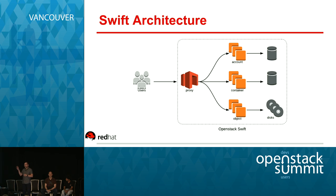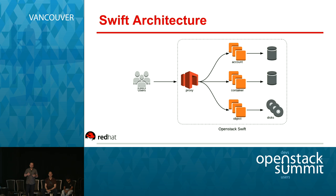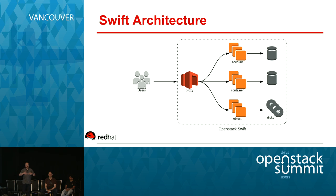The account in Swift — you can call it the tenant or project in OpenStack terms. Then we have the container server, which is another metadata server whose job is to hold a collection of all the objects located inside that container. If you're from S3, you can think of a container as a bucket. And then we have the object server, whose job is to take data coming from the proxy, sent by the user, and place that data on a file system and store it.